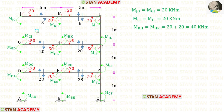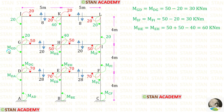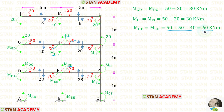Now let us find the moments in the columns. First, let us take member JG. If this moment is 20, then MJG and MGJ should also be 20. Similarly, MLI and MIL should also be 20. We can find MKH and MHK by adding these two moments: 20 plus 20 gives 40. Now let us find MGD and MDG — for that we subtract 20 from 50, giving 30. Now let us find MHE and MEH — for that we add these two moments and subtract this moment, giving 60. Now let us find MIF and MFI — subtracting this moment by 50 gives 30. Now let us find MDA and MAD — subtracting these moments gives 40. Now let us find MEB and MBE — adding these two moments and then subtracting gives 40.